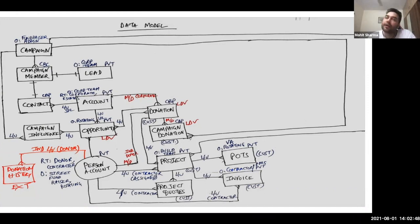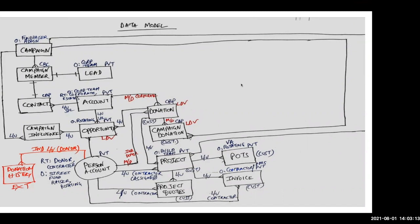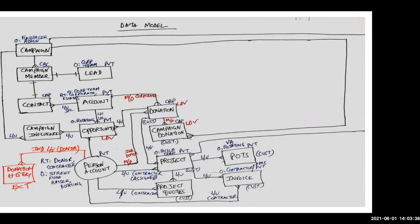Mohit explains he is recommending a primary default campaign influence model with auto-association based on contact roles, where the person account or contact of the business account will be linked to the opportunity as a contact role. The judge follows up asking how that works with the community user licensing choice, especially for B2C customers who are being made part of opportunity roles — how does security and visibility work and what is the licensing choice on the individuals?